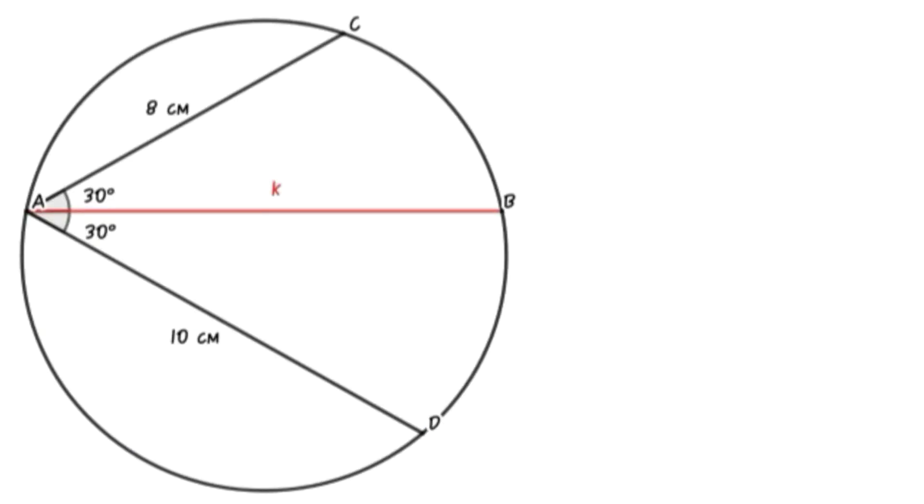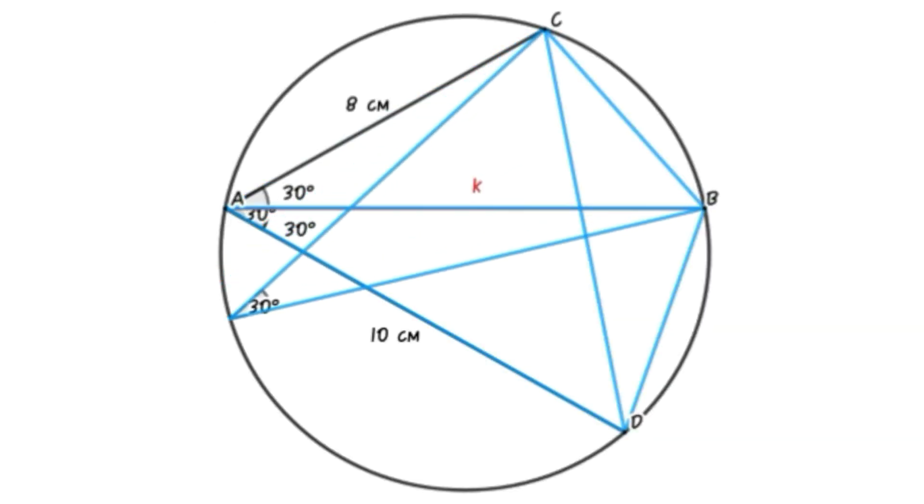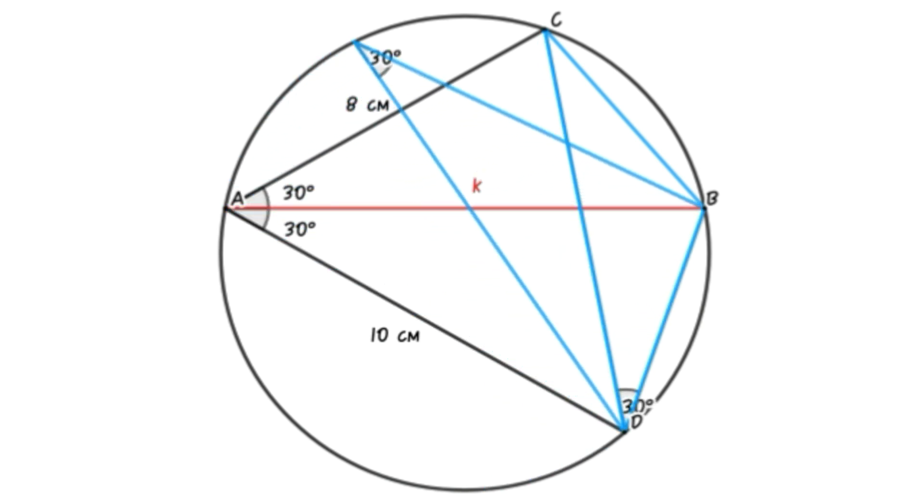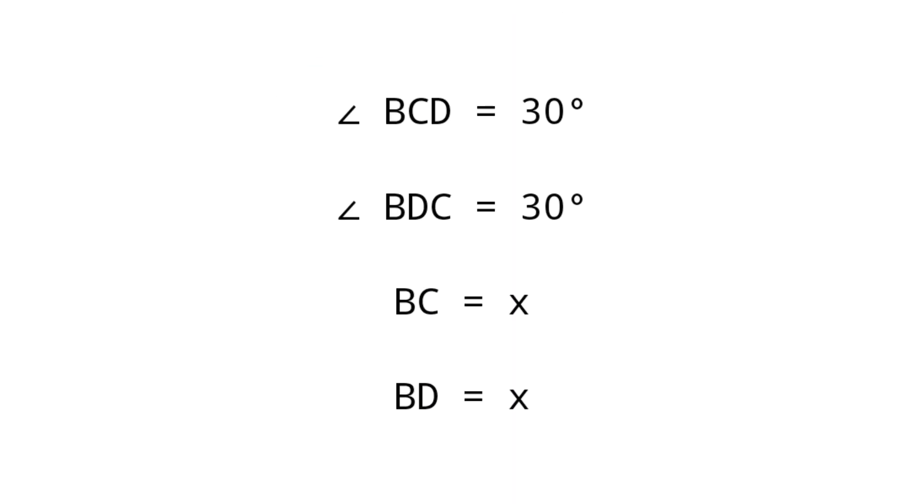For solving this problem, we have to connect BD, BC, and CD and form triangle BCD. Consider triangle BCD. We can easily find that angle BCD equals 30 degrees and angle BDC equals 30 degrees.